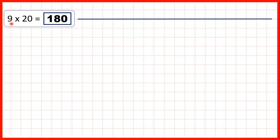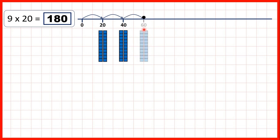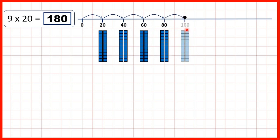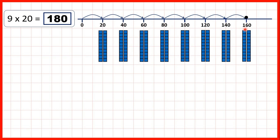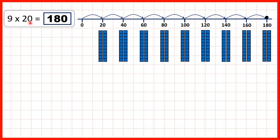For our last question, we had 9 times 20. So we can make 9 jumps of 20: 20, 40, 60, 80, 100, 120, 140, 160, and then our 9th jump takes us to 180. So 9 times 20 is 180, because if we had 1s instead of 10s, 9 times 2 is 18. So if we have an end zero in our multiplication question, we can ignore it, do the multiplication, and then put an end zero on the answer.